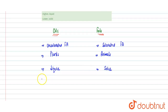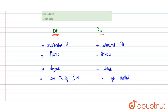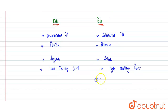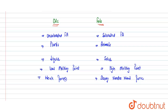Oils have a low melting point because of their liquid nature and unsaturated structure. Fats have a high melting point. Fats also contain strong Van der Waals forces between their molecules, whereas in the case of oils, these intermolecular forces are weak. These are the major differences between oils and fats.